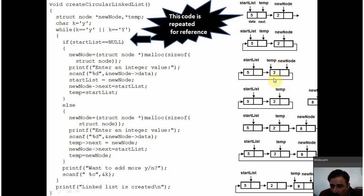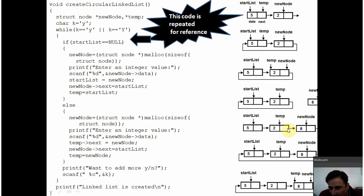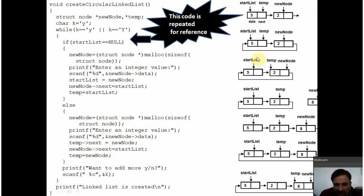Temp is always used to connect the nodes — it is through this temp node that you will be pointing the new nodes. The user is asked again whether to add more. Suppose the user presses Y again. StartList is not null, so control comes to the else block. A new node is created; suppose the user presses 8 — 8 will be assigned to the data member of the new node. The next pointer of temp is set to point at newNode, and then the next pointer of newNode is set to point at startList. This verifies that temp is always used to connect the nodes. This is how the circular linked list is created.